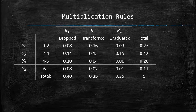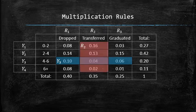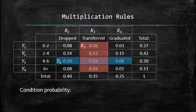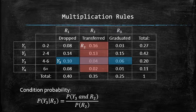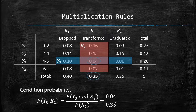Contingency tables are the best playground for practicing the conditional probability formula. Let's recall the following contingency table with events Y3 and R2 defined as shown. Let's find the conditional probability of Y3 given R2 using the conditional probability formula, where the numerator is the joint probability of Y3 and R2, and the denominator is the marginal probability of R2, which we compute to get 0.11.